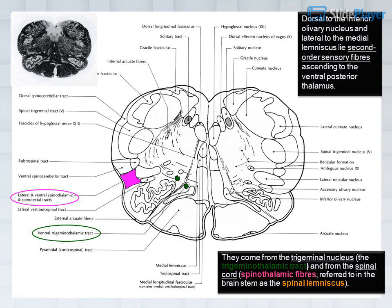Dorsal to the inferior olivary nucleus and lateral to the medial lemniscus lie second-order sensory fibers ascending to the ventral posterior thalamus: the trigeminothalamic tract from the trigeminal nucleus, and spinothalamic fibers from the spinal cord, referred to in the brainstem as the spinal lemniscus.